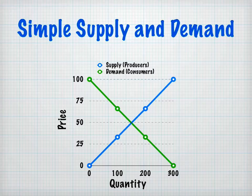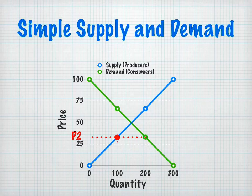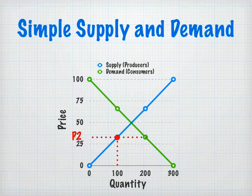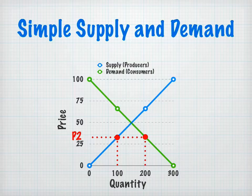Let's talk about another market price. Market price two: at $33, suppliers are only willing to make 100 units of a certain Xbox 360 game. They're not interested in making a whole ton of them because there's no profit incentive — it's not selling for very much, and therefore they don't want to make too much of that one good. Whereas at $33, consumers are demanding — they're willing to buy — 200 units. Now here we have a problem: consumers are willing to buy 200, and producers are only willing to produce 100.